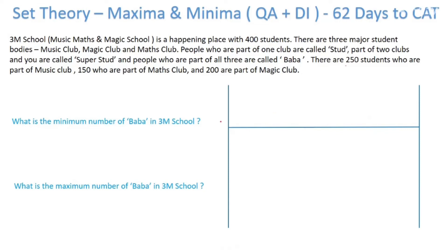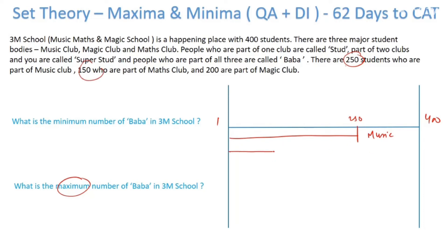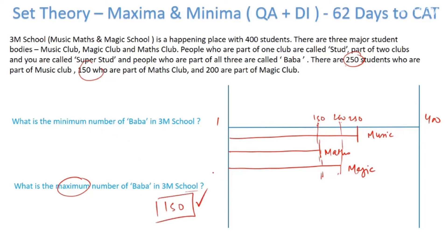To find the maximum, I plot Music from 1 to 250. To maximize overlap, I place Maths Club also starting from 1, so from 1 to 150. Then I place Magic Club from 1 to 200. Now the common part across all three is the smallest range, which is 1 to 150. So the maximum number of baba in 3M School is 150.